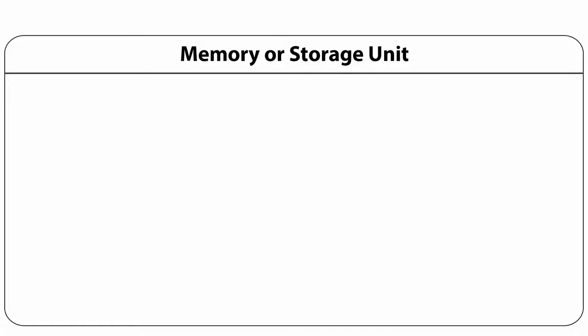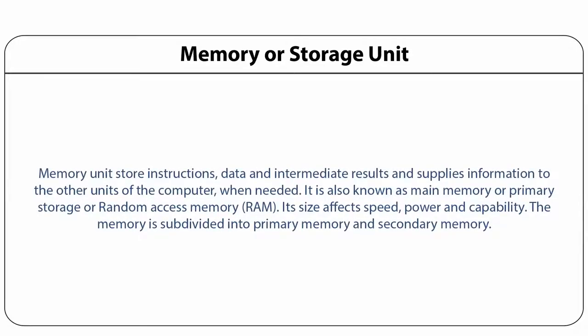The memory or storage unit stores all the instructions, data and intermediate results, and supplies information to the other units of the computer as and when needed. It is also known as main memory or primary storage, or more commonly as random access memory or RAM. Memory may be divided into primary memory — which constitutes RAM as well as read only memory, a built-in memory of the system — and secondary storage, also known as secondary memory.